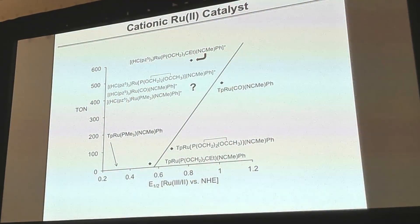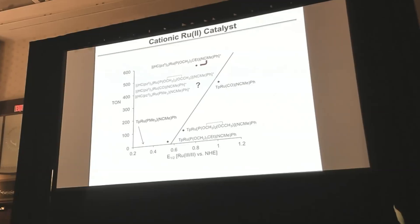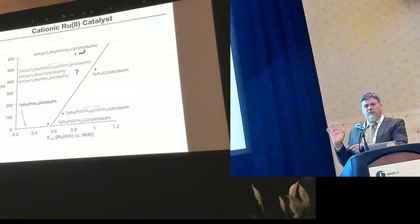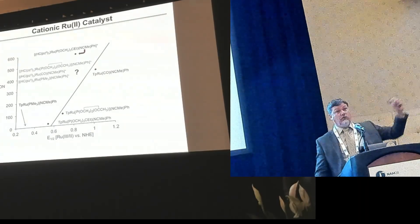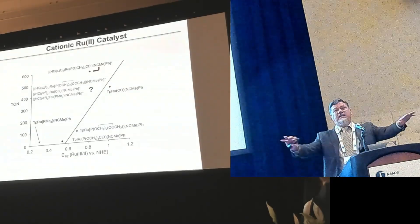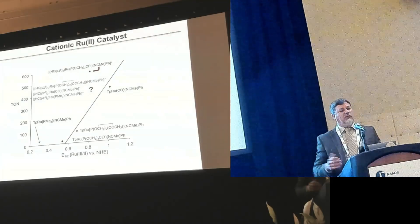We were able to make a range of precursors. Taking the Ru(III/II) redox potential versus NHE, we got a pretty reasonable correlation between that and the turnover numbers before catalysis would halt. The deactivation is nearly always the formation of that vinyl complex. So we can optimize the catalyst, and eventually we got a catalyst — shown on the next slide — which gave us nearly 600 turnovers before it was fully deactivated. The problem was we could only push this so far. We made a ruthenium precursor with a potential of 1.4 V, but it reduced down. It was too electron-deficient. So we could only stabilize ruthenium-2 so much.